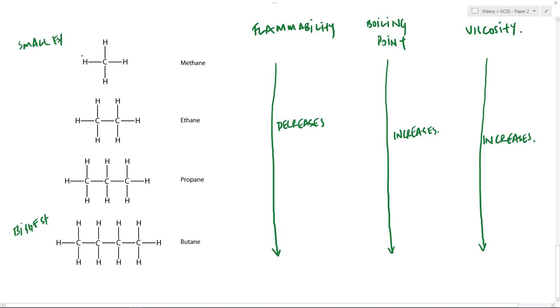So once more, flammability, as our molecules increase in size, they become less flammable, less easy to ignite. Boiling point, as our molecules get bigger, the boiling point increases, as does the viscosity. And of course, all of these things are true on the reverse. As they get smaller, the flammability would increase, the boiling point would decrease, and the viscosity would also decrease. So there you have it. Hydrocarbons, what they are, a bit about alkanes, properties. I hope that made some sense.